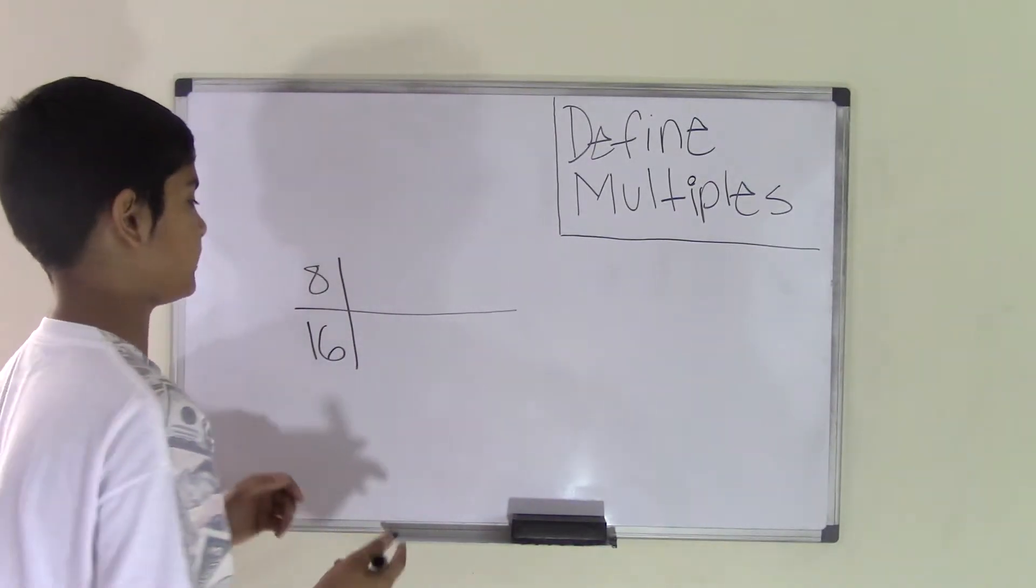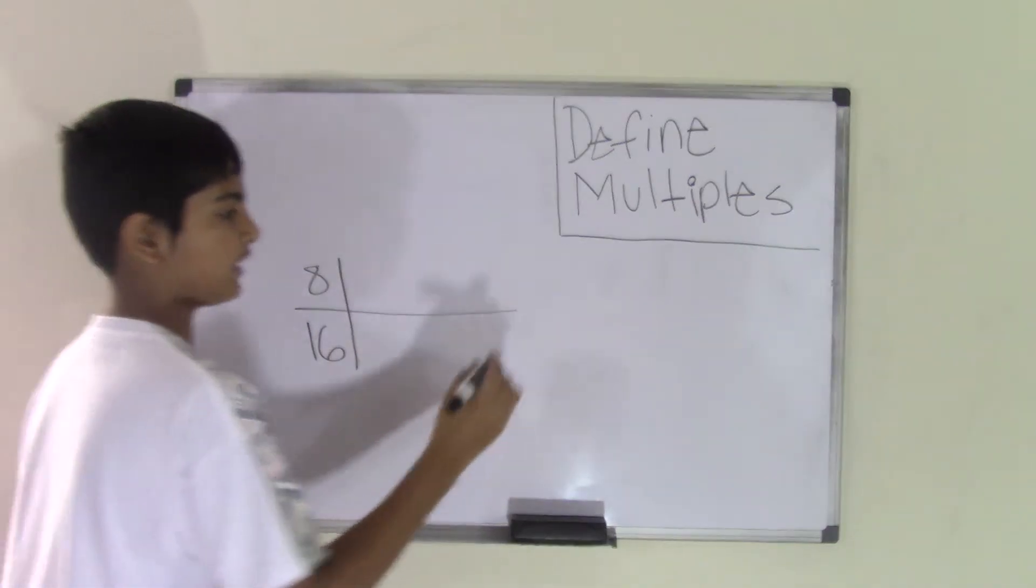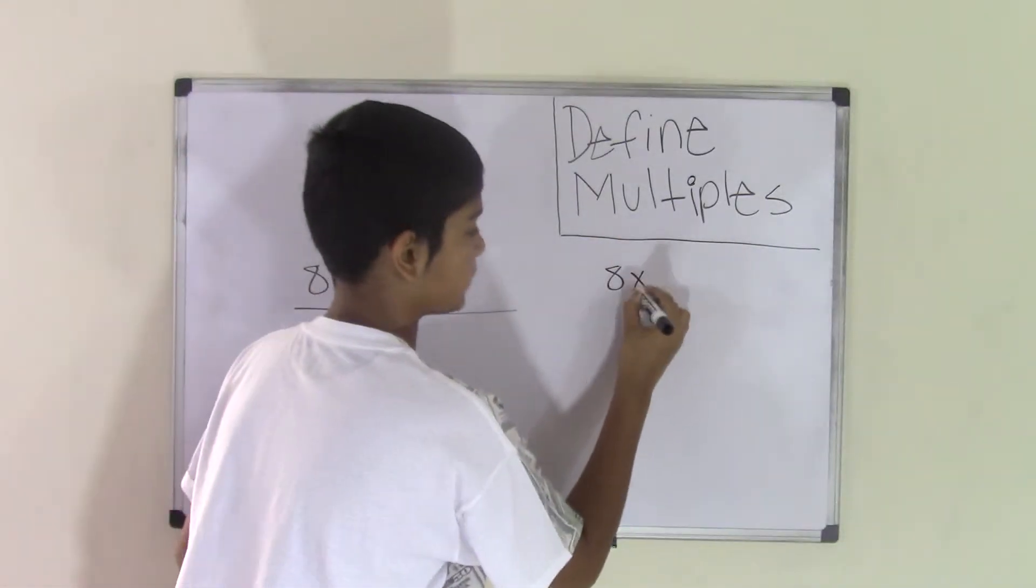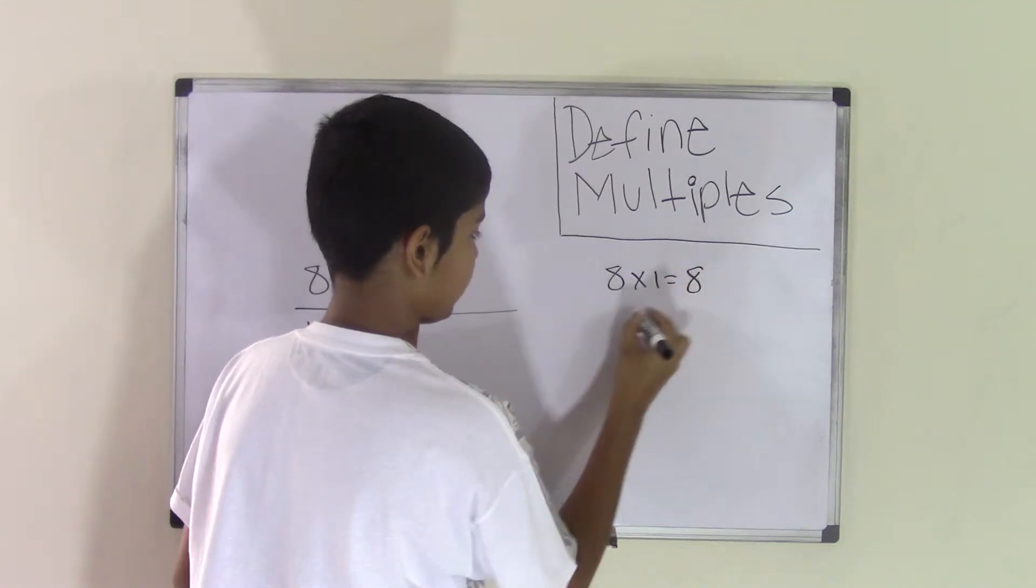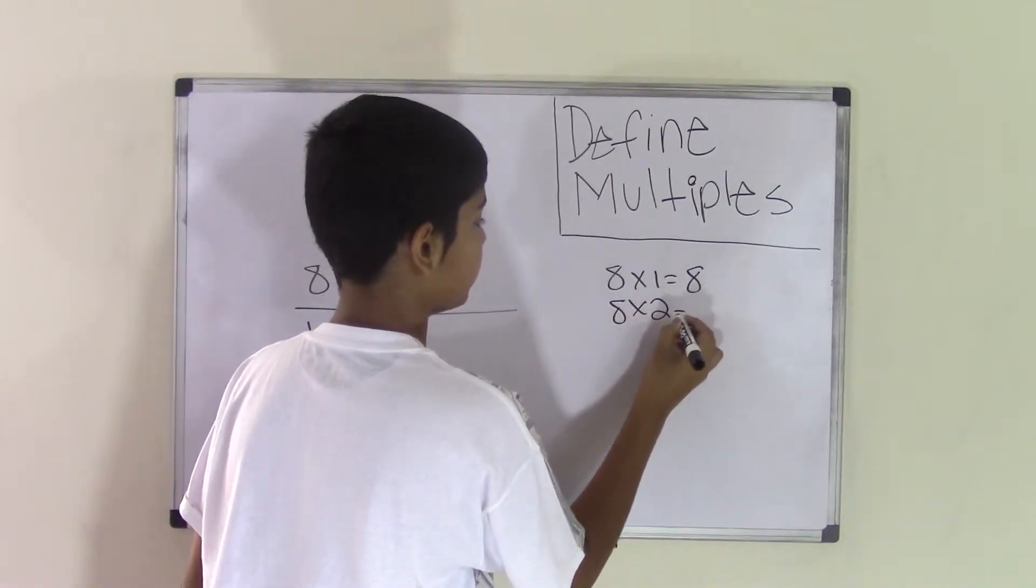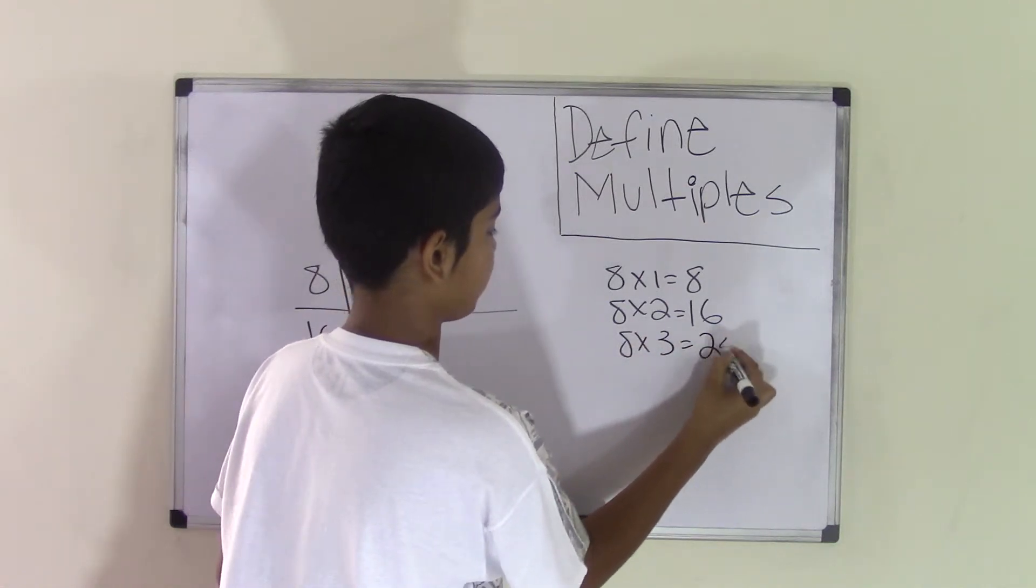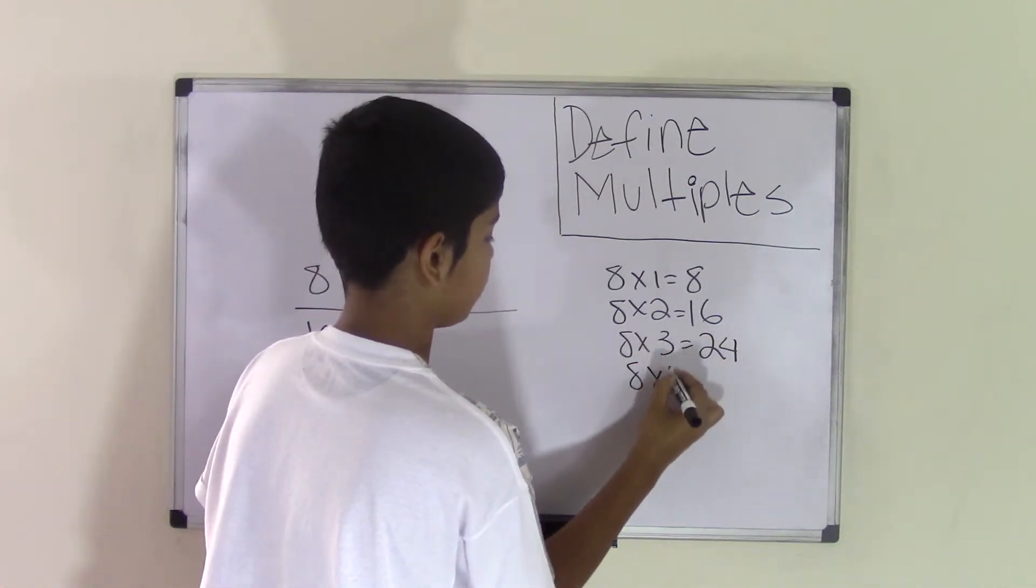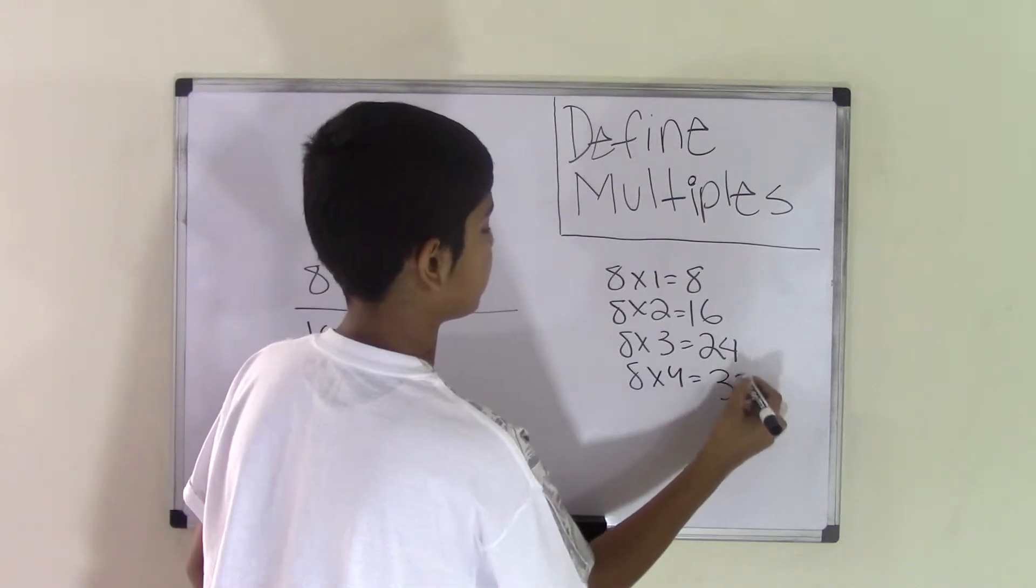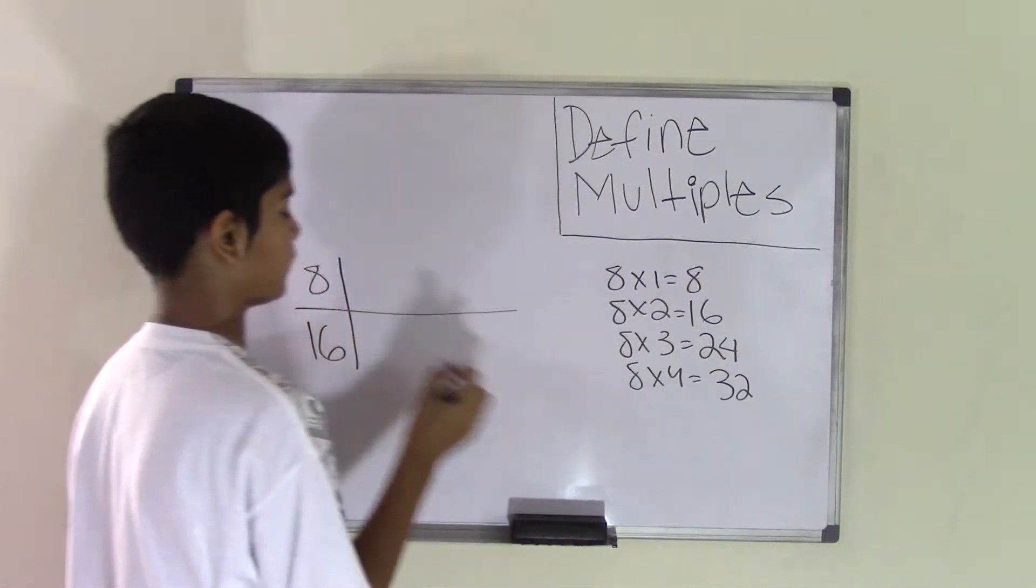First let's list some multiples of 8. To do that, I'll have to multiply 8 by other numbers. So, 8 times 1 is 8. 8 times 2 is 16. 8 times 3 is 24. 8 times 4 is 32. So, let's just write down these multiples for now.